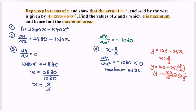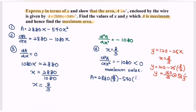To find the maximum area, we substitute x equals 8/3 into the area formula: A equals 2880 multiplied by 8/3 minus 540 multiplied by (8/3) squared. The maximum area is 3840 cm squared.